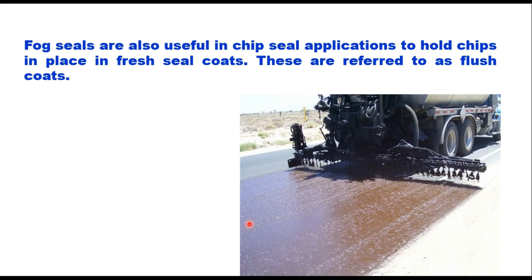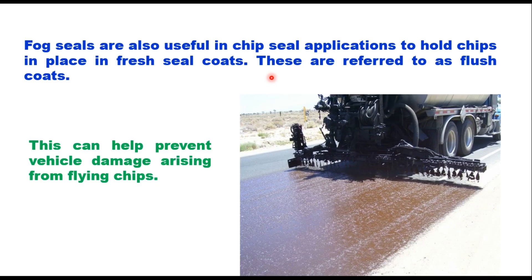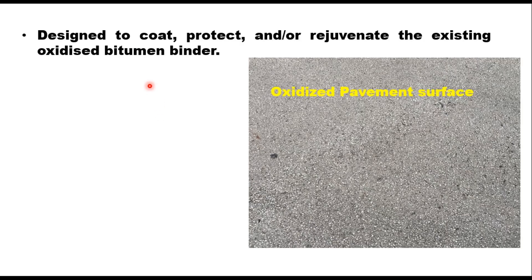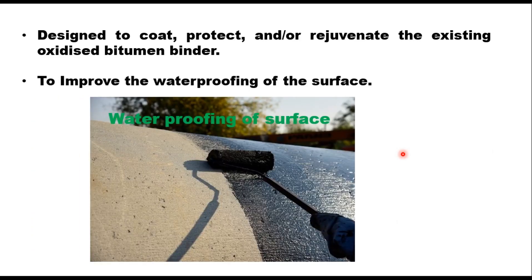Fog seals are also useful in chip seal applications to hold chips in place in fresh seal coats. These are referred to as flush coats, and this can help prevent vehicle damage arising from flying chips. A fog seal is designed to coat, protect, and/or rejuvenate the existing oxidized bitumen binder on the surface to improve waterproofing.